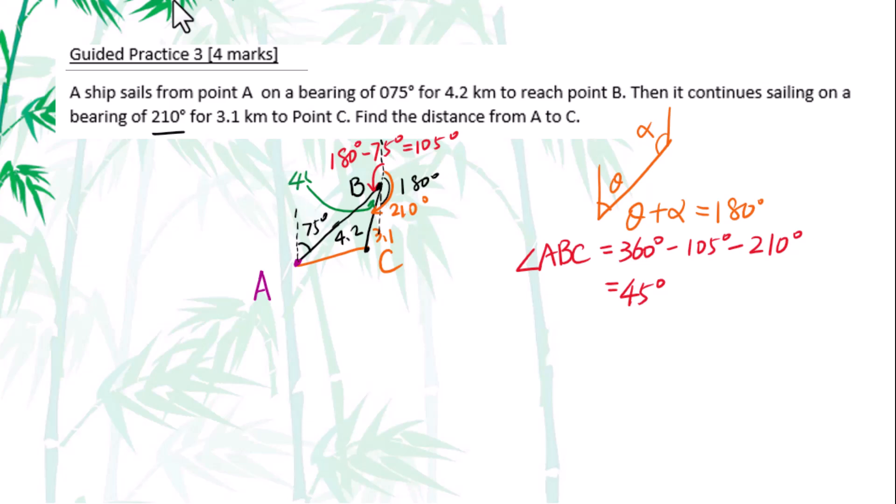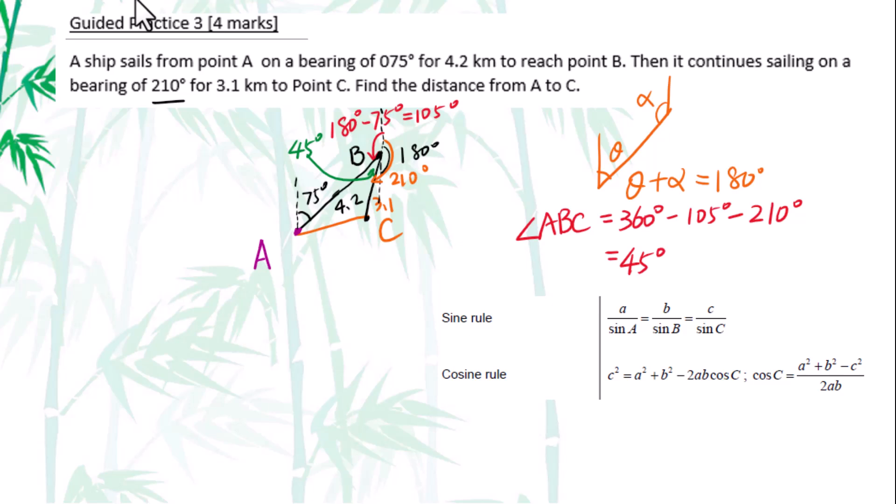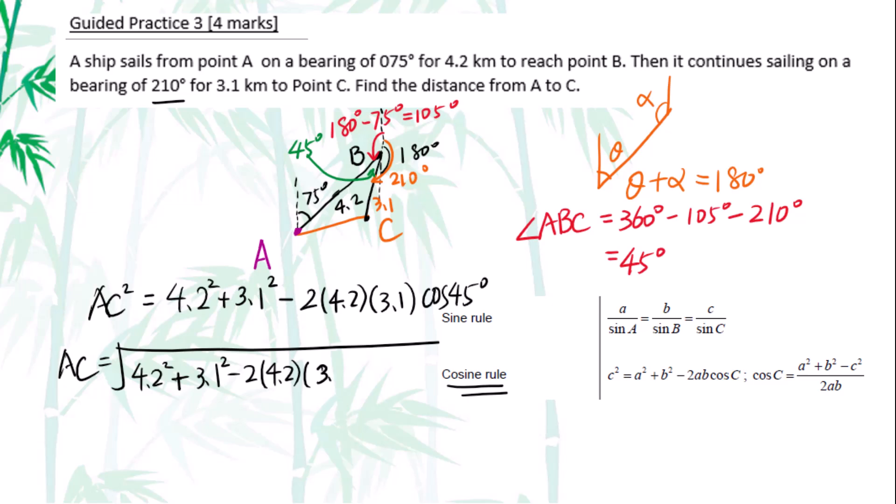This angle is 45º. Since 45º angle is an included angle, we got to use the cosine law. AC squared equals - A equals 4.2, B equals 3.1 or A equals 3.1, B equals 4.2. It doesn't matter. 4.2 square plus 3.1 square minus 2 times 4.2 times 3.1 cosine 45º.